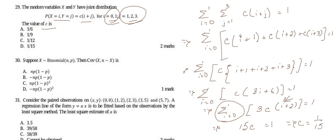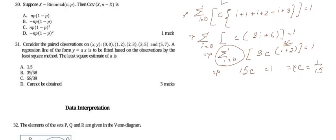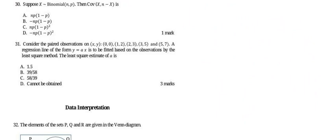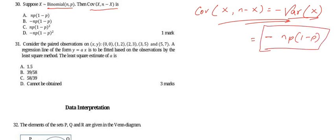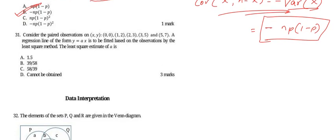Checking the options, option D matches our answer. Hence the answer to question 29 is option D. Now let's move on to question 30. Question 30 says: suppose X ~ Binomial(n, p), then Cov(X, n−X) is. We know that Cov(X, n−X) = −Var(X) = −np(1−p). Checking the options, option B matches, hence option B is the correct answer to question 30.